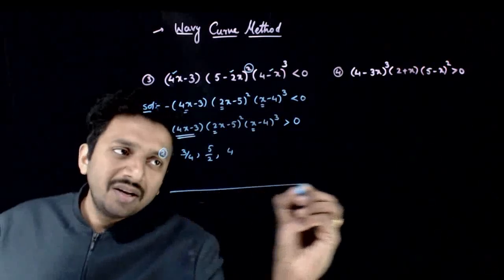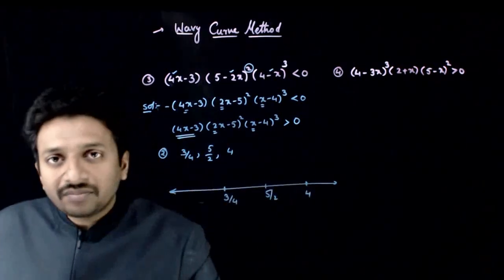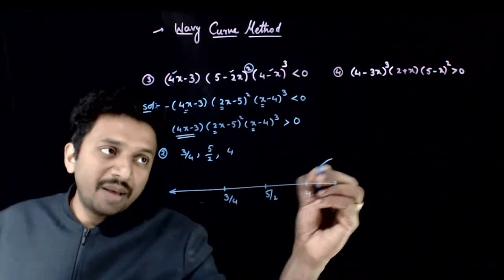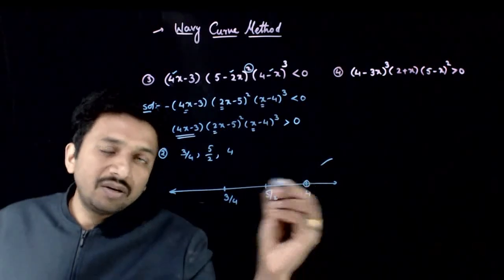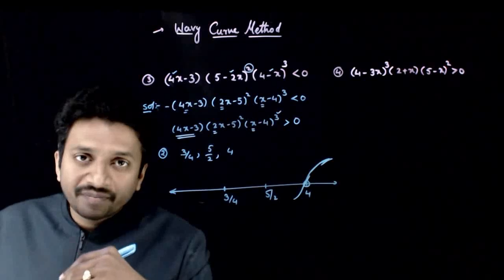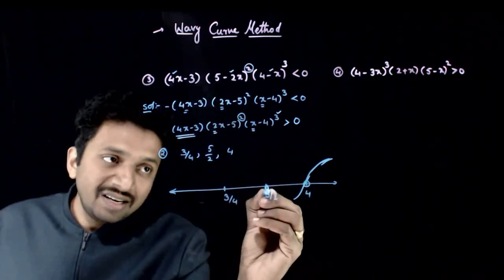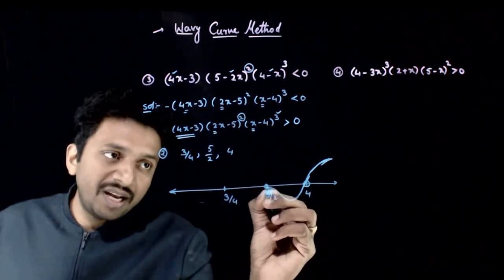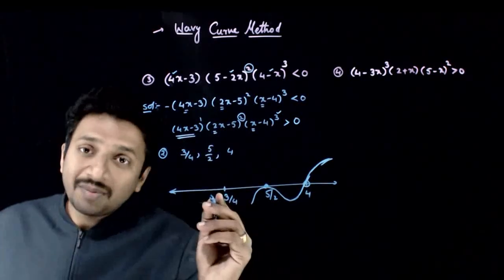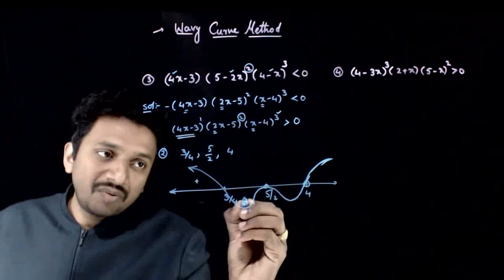Let us draw the wavy curve. We know 3/4 < 5/2 < 4, so we plot these on the real number line, splitting it into 4 parts. In the rightmost part, we start from above the real number line. At x = 4, the power of x − 4 is odd, so the sign changes — the curve goes from positive to negative. At x = 5/2, the power of 2x − 5 is even, so the sign does not change — the curve approaches from the negative side and returns to the negative side. At x = 3/4, the power is 1 (odd), so the sign changes — the curve goes from negative to positive. The wavy curve is now complete: positive, negative, negative, positive.